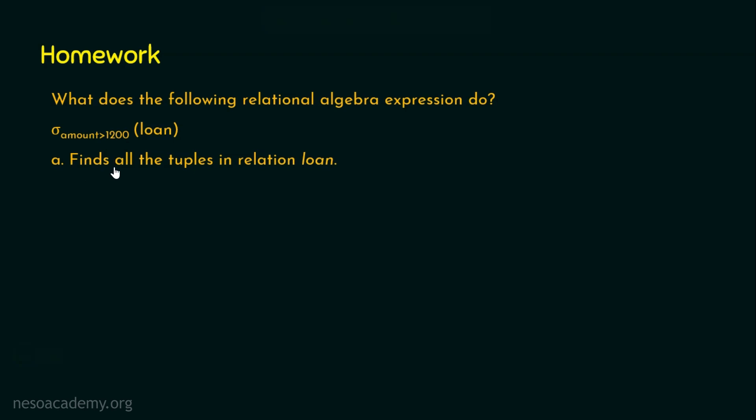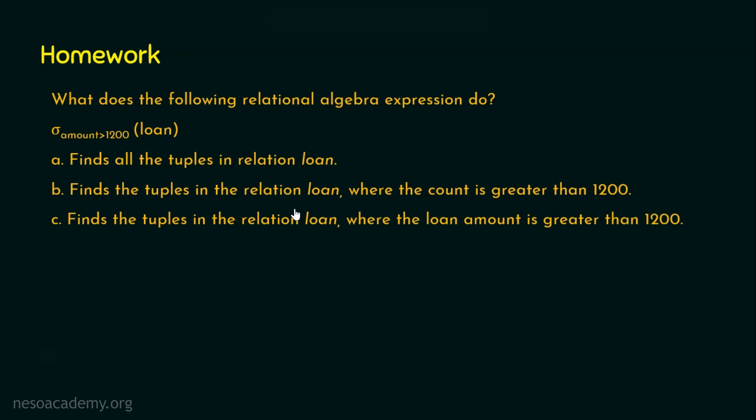Option A, finds all the tuples in the relation loan. Option B, finds the tuples in the relation loan where the count is greater than 1200. Option C, finds the tuples in the relation loan where the loan amount is greater than 1200. And option D, it lists only the amount column from loan relation that has amount greater than 1200.